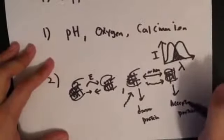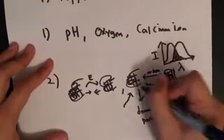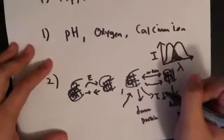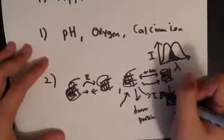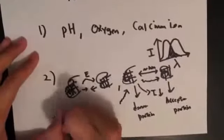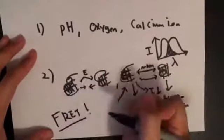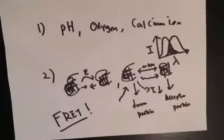And when this happens, the lifetime of the donor protein then decreases. Thus, based on this lifetime change, the protein interaction can be studied, and this is called fluorescence resonance energy transfer, or FRET analysis.